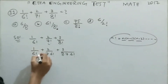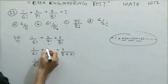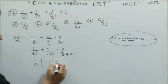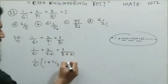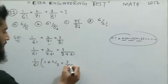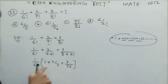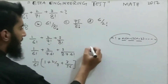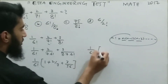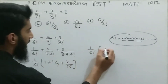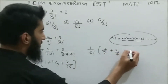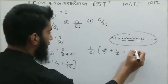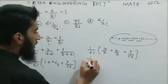After this, I take 1 over 6! common. From the first term we are left with 1; from the second term, taking 1/6! common, we are left with 2/7; and from the third term we are left with 3 divided by 8×7, which gives us 3/56. Rewriting, this becomes (1/6!) × (1 + 2/7 + 3/56).